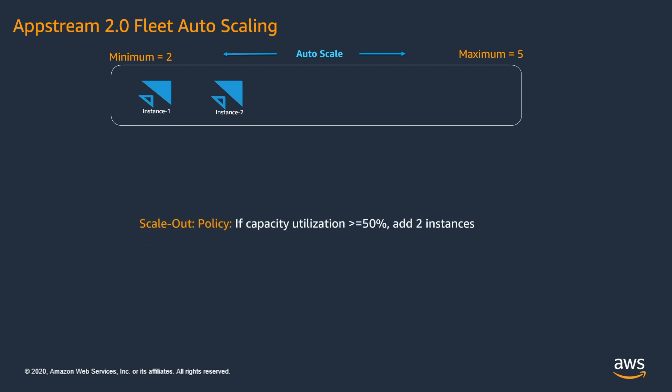For this demo, we have defined a scale-out policy that adds 2 instances to the fleet if the capacity utilization is greater than or equal to 50%. With this initial configuration, let's see how our scale-out policy will add instances to the fleet based on user demand. At present, since no one is connected to the fleet, the capacity utilization is at 0%.